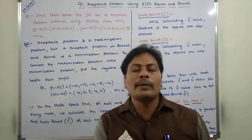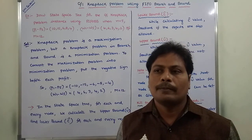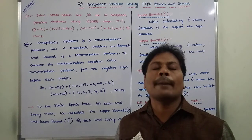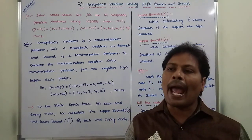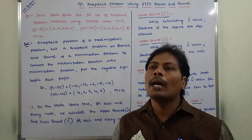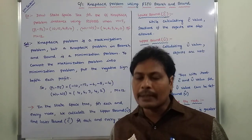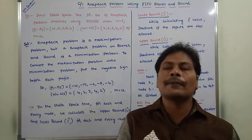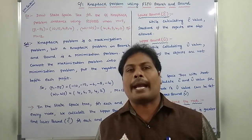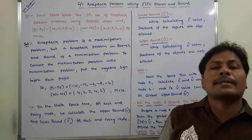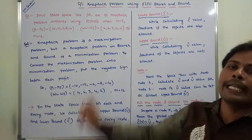While calculating the lower bound C-cap value, we are allowing fractions of objects. Fractions of objects means we may accept the complete object, half of the object, two-thirds of the object, or one-third of the object. So either a complete object or a fraction of an object is placed into the knapsack while calculating the lower bound value C-cap.